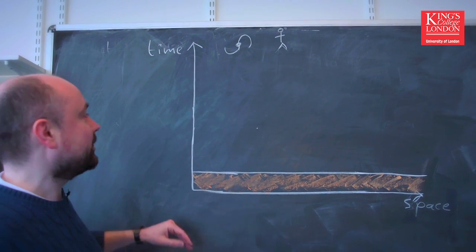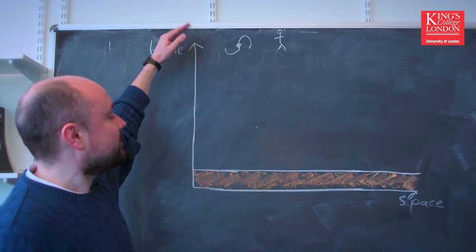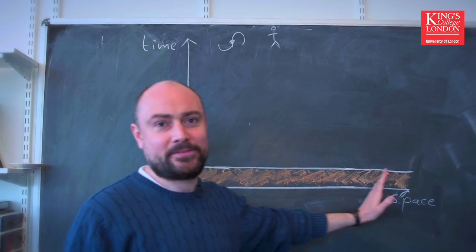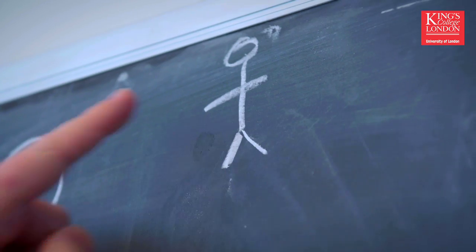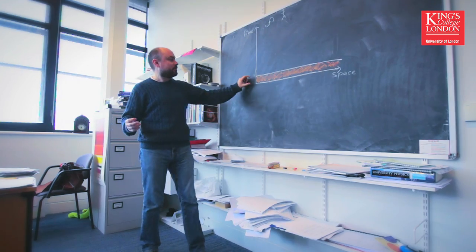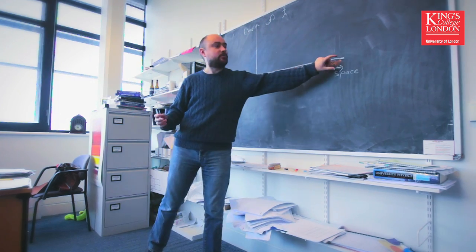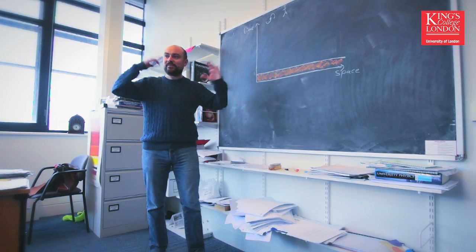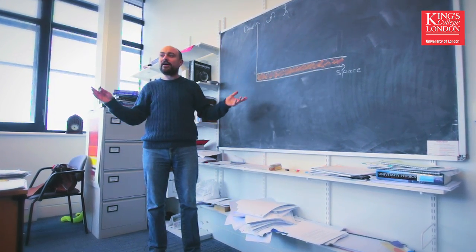This is our diagram of the universe — this is time and this is space. That's where we are today. The universe is expanding, which means that if you run time backwards everything used to be a lot closer together. The density was higher, the pressure was higher, and the temperature was higher. For the first 400,000 years of the universe it was basically full of fire.